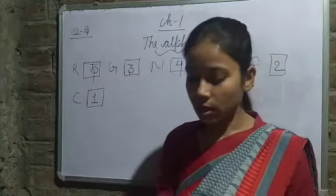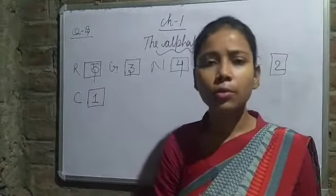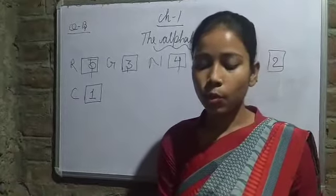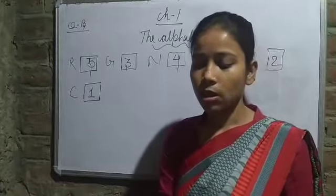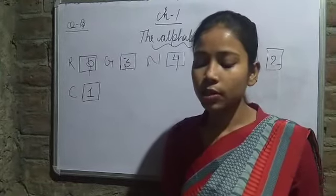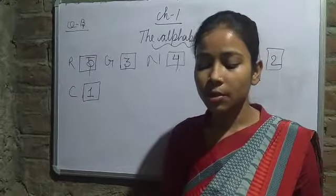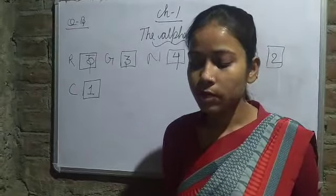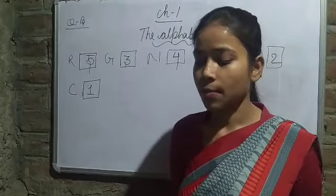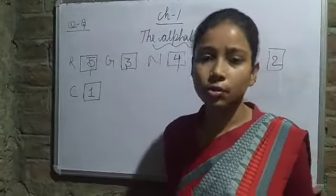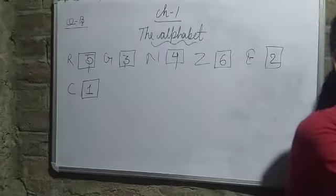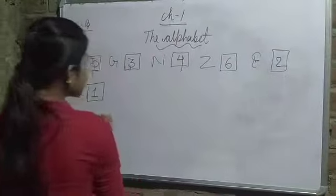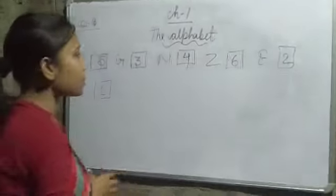I think you guys already know A, B, C, D properly. Let us look at some more words - these words will appear in alphabetical order. Now, if the first letter of all the words is the same, we look at the second letters of the words.